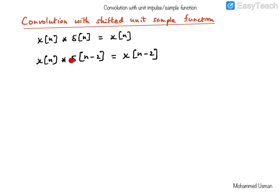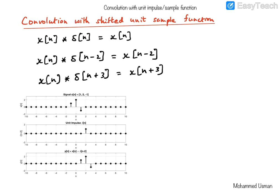In this case, the example is showing a shift to the right by two. So x of n convolved with delta of n minus two produces the same x of n shifted to the right by two. Similarly, we can say that if the signal x of n is convolved with the left-shifted version of the unit sample, say delta of n plus three, the result will be the signal x of n also shifted to the left by three. We see this illustration here where the signal x of n is convolved with a shifted version of the unit sample function — the impulse is at n equal to two, so it is right-shifted.